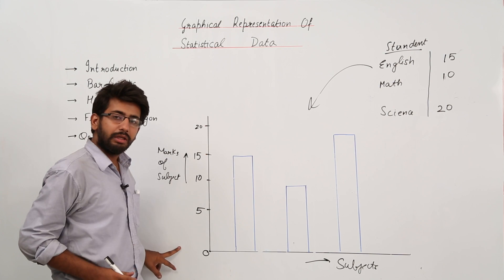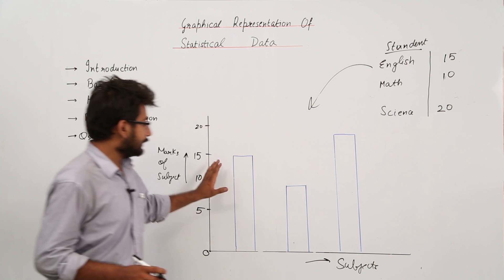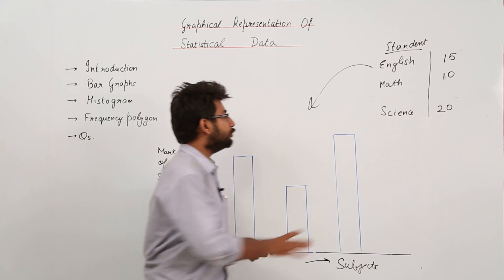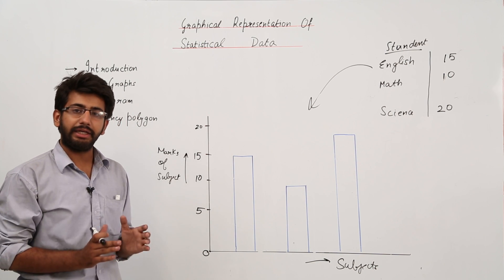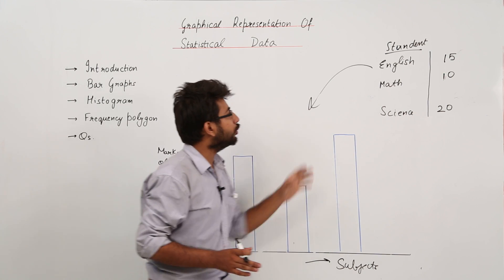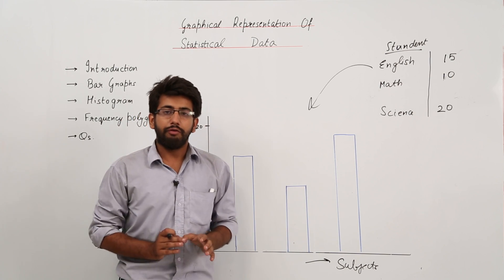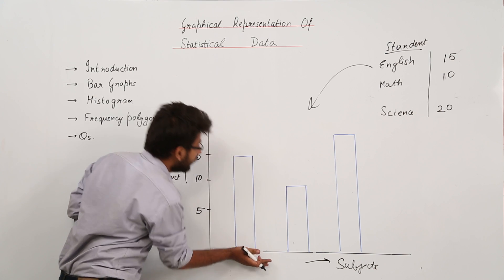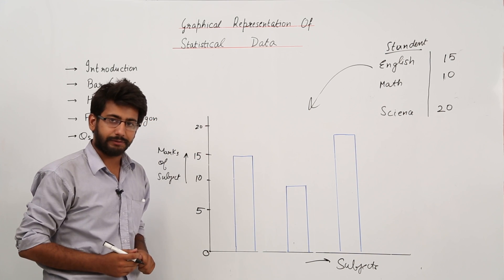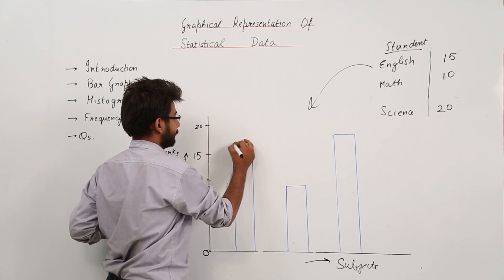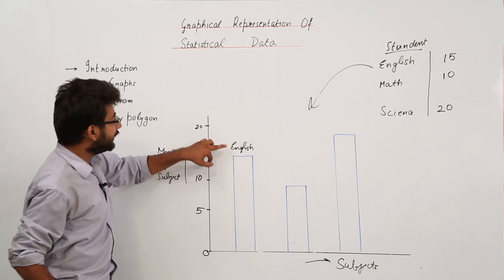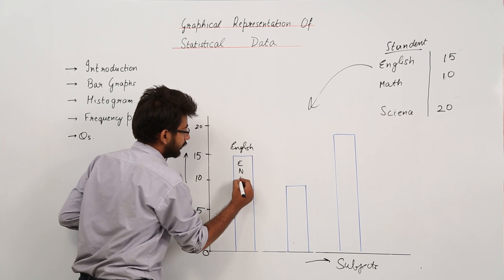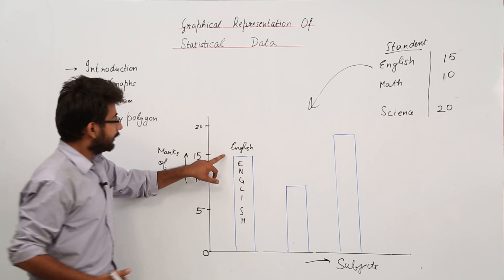Now we make the rectangles. First, for English: the marks are 15, so we draw a rectangle that reaches up to the value 15 on the y-axis. We label this rectangle 'English' — you can write the label above, below, or within the rectangle. This bar represents the marks of the student in the English subject.